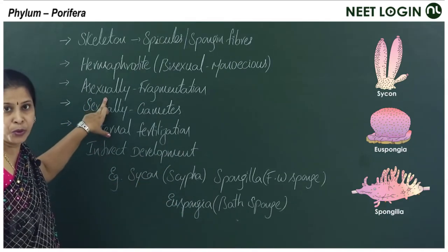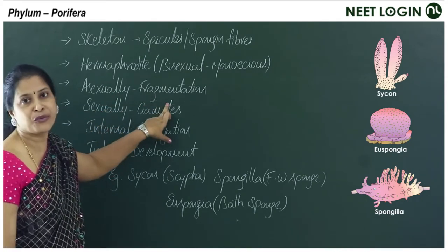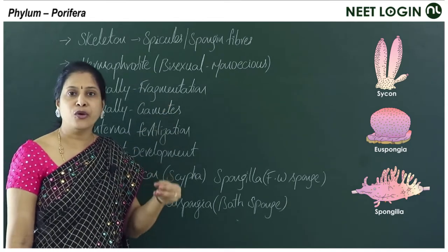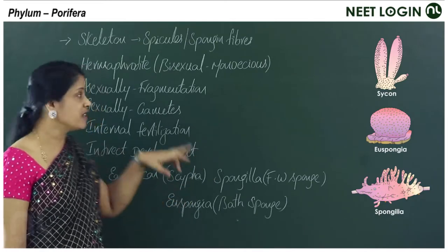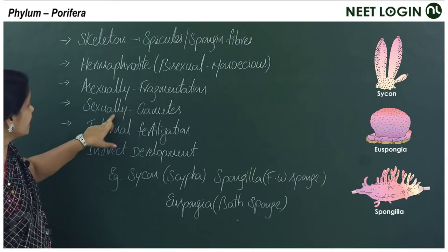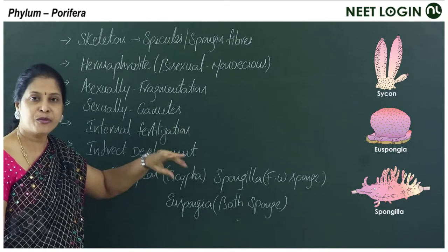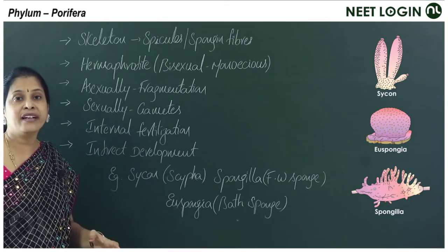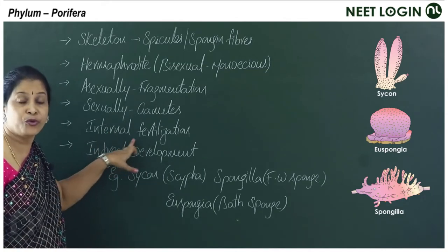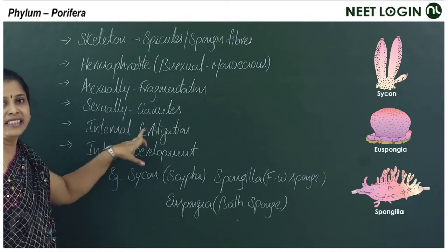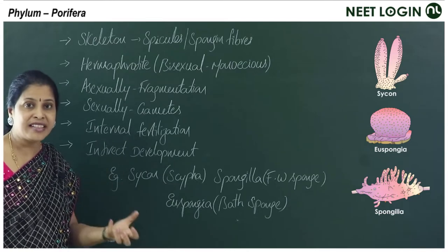Sponges reproduce both asexually and sexually. Asexual reproduction is by fragmentation — each broken piece develops into a new sponge. Sexually, they produce gametes; male and female gametes fuse inside the body, so fertilization is internal.